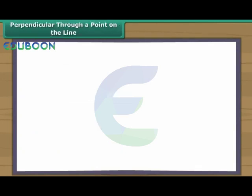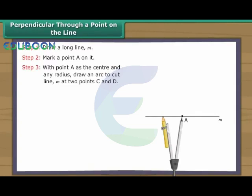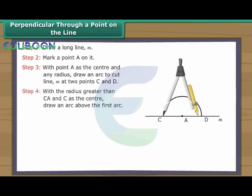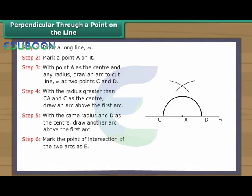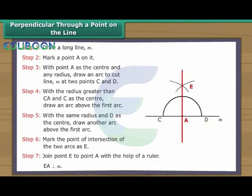Perpendicular through a point on the line. Draw a long line M. Mark a point A on it. With point A as the centre and any radius, draw an arc to cut line M at two points C and D. With a radius greater than CA and C as the centre, draw an arc above the first arc. With the same radius and D as the centre, draw another arc above the first arc. Mark the point of intersection of the two arcs as E. Join point E to point A. EA is perpendicular to line M.